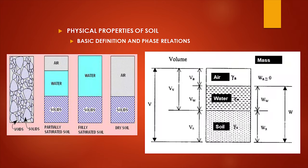The physical properties of soil and some basic definitions are represented in a 3D phase diagram having solids, water, and air. If the space is completely filled with water, it is saturated soil. If air space is left free, it is dry soil. If air space is partially filled, it is partially saturated.